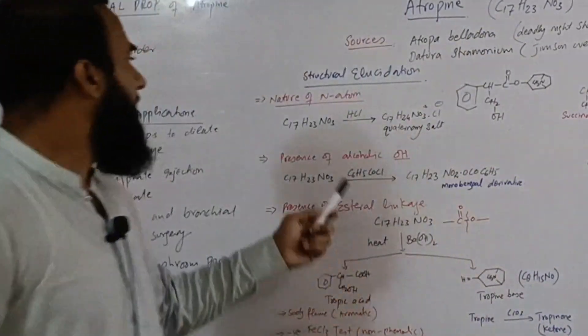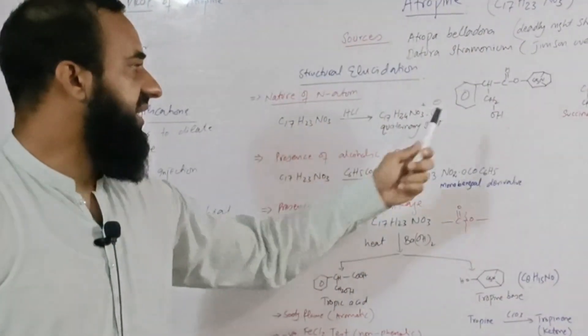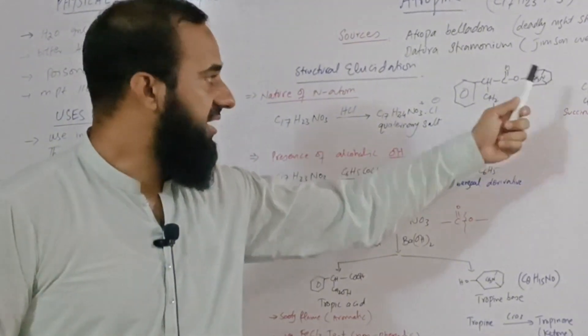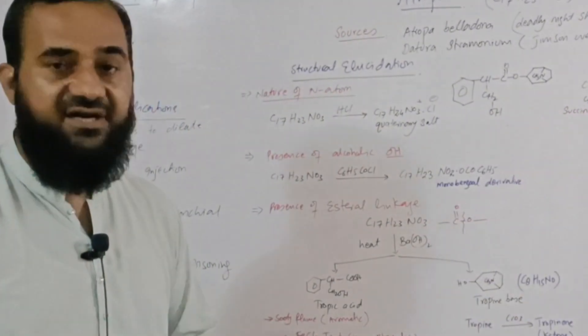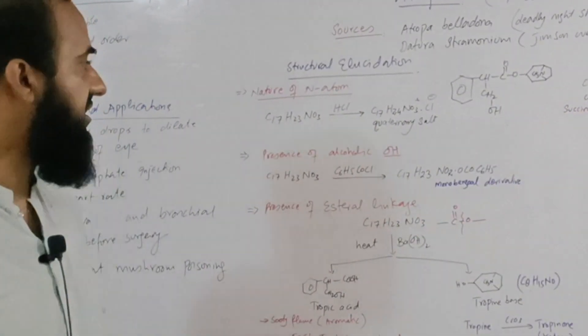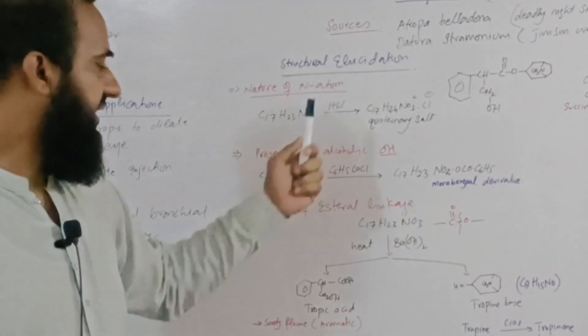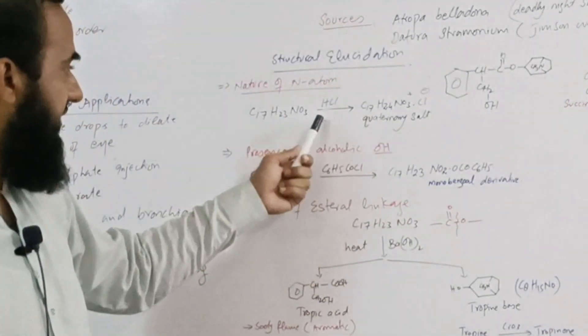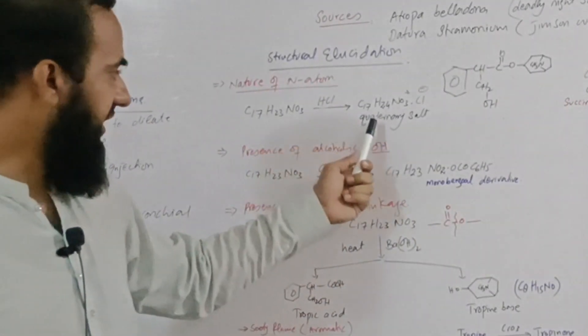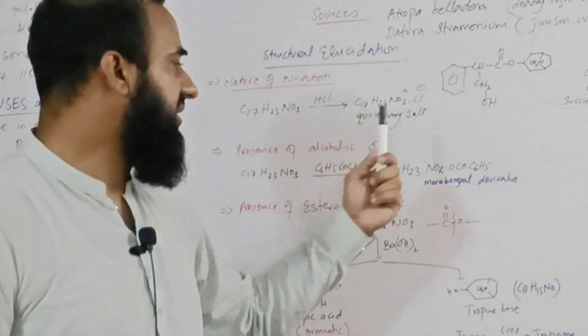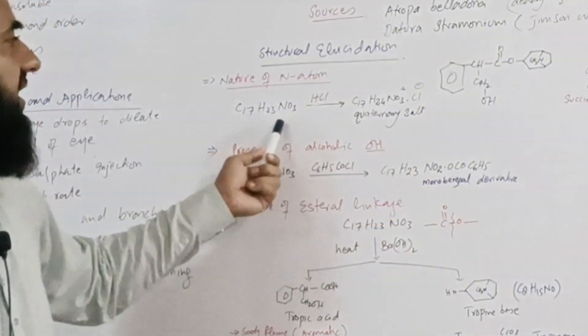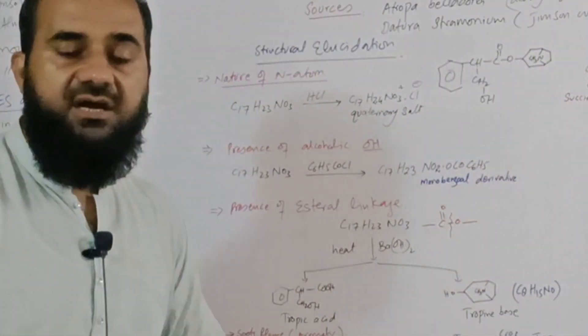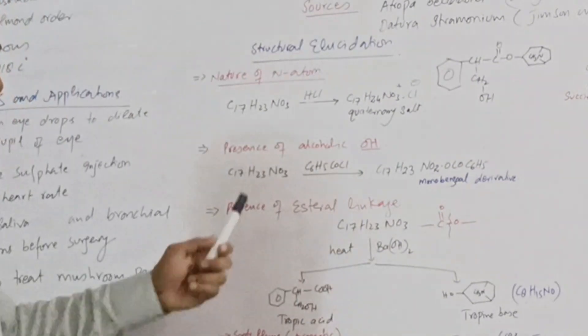Now structural elucidation. The structure shows that nitrogen is present. Whether this nitrogen is primary, secondary or tertiary, we treat the atropine with HCl. We can also treat it with alkyl halide. By treating with HCl we get quaternary ammonium salt. It shows that the nitrogen present in this compound is tertiary in nature.